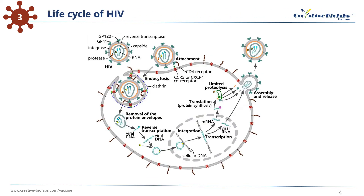HIV uses the machinery of the CD4 cells to multiply and spread throughout the body. This process, which is carried out in seven steps or stages, is called the HIV life cycle. The seven stages are: binding, fusion, reverse transcription, integration, replication, assembly, and budding.